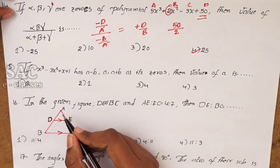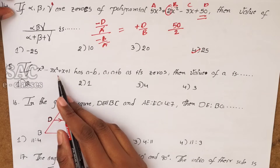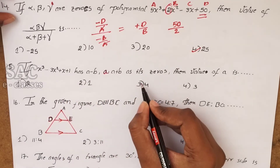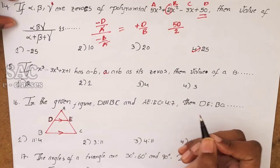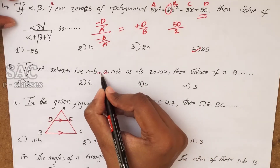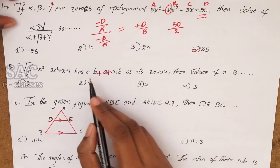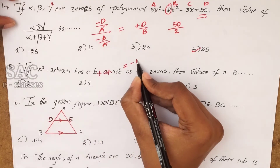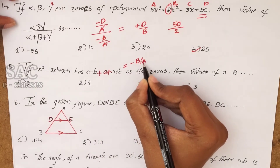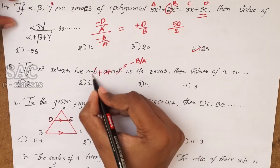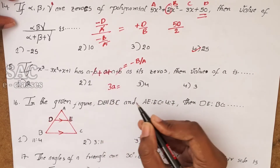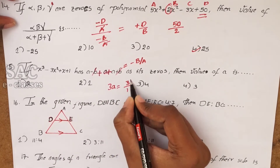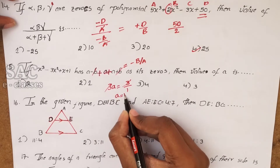Problem 15: x³ − 3x² + x + 1 has roots A−B, A, and A+B. The sum of roots = −(−3)/1 = 3. So (A−B) + A + (A+B) = 3A = 3, giving A = 1.